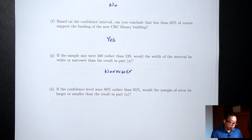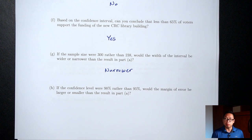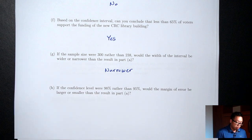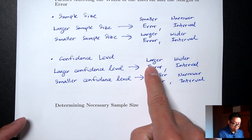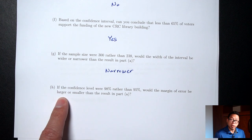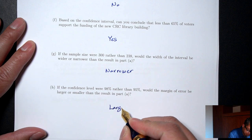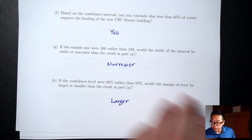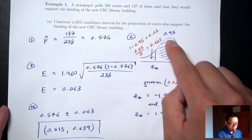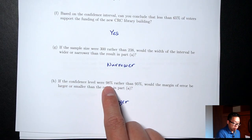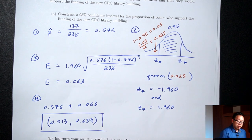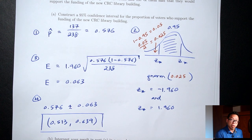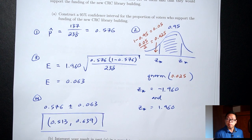Part H: if the confidence level were 98% rather than 95%, would the margin of error be larger or smaller? 98% is a larger confidence level. A larger confidence level means a larger area in the middle — 0.98 instead of 0.95 — so z-star is bigger. Since z-star is multiplied in the formula, multiplying by a bigger number gives a larger margin of error. So the answer is: larger error.